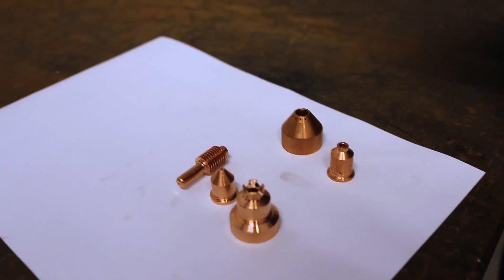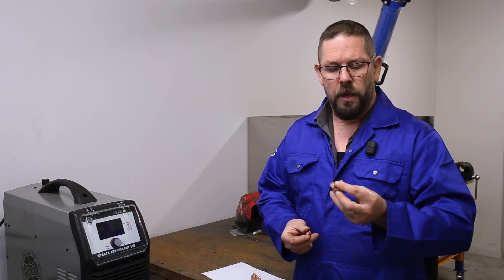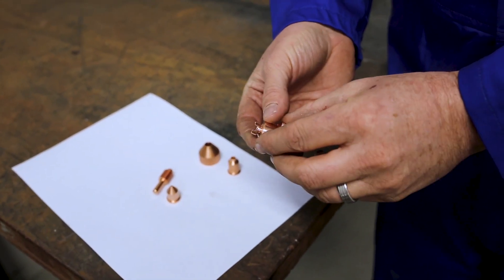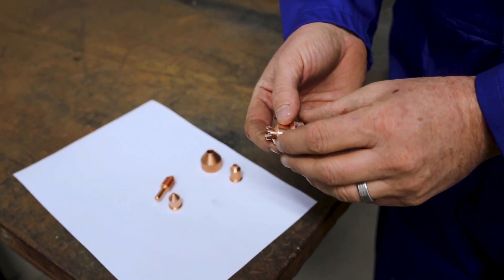Now we're going to have a talk about the consumables that we can use for this torch. Here's a shield cap. You'll notice it's got a crown on it. This helps keep it above the work.